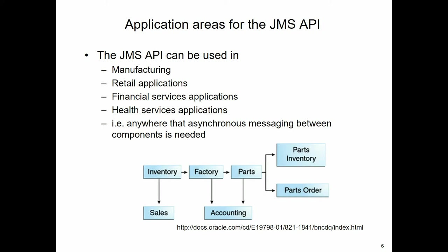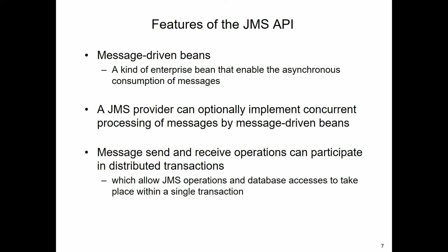We're going to take a look at the features of the JMS API. Message-driven beans are right at the center of this - they are a kind of enterprise bean that enables asynchronous consumption of messages. We're also able to define whether these message beans process messages concurrently or not, and therefore it's quite feasible that multiple messages can be arriving and multiple instances of the message bean will be handling those messages.